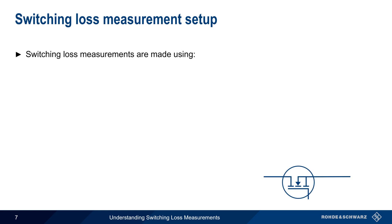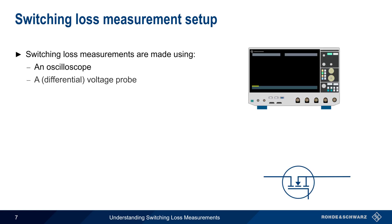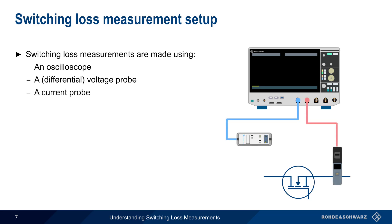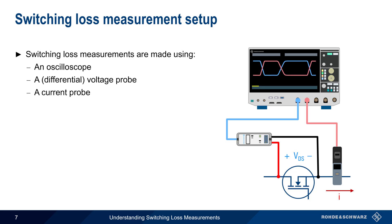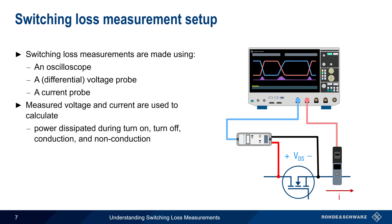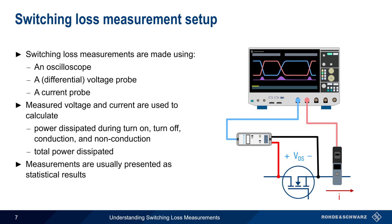Quantifying or measuring switching loss requires the use of an oscilloscope, a voltage probe — often a differential probe — and a current probe. The voltage probe measures the voltage across, and the current probe measures the current flowing through, the switching device. These measured values of voltage and current are used to calculate the power dissipated in the four different states of operation — turn-on, turn-off, conduction, and non-conduction — as well as the total power dissipated in all states. Most often, multiple switching loss measurements are made and results are presented as statistical values.